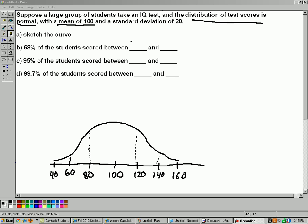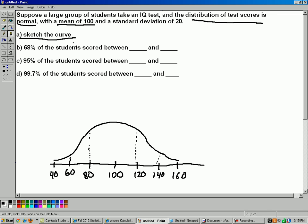I forgot to finish the last question, so all I did was part A. I sketched the curve. The rest is pretty simple. So part B, 68% of the students scored between what and what?